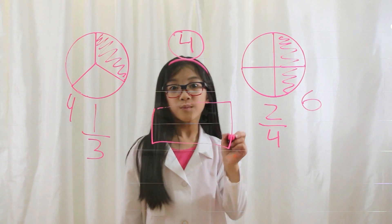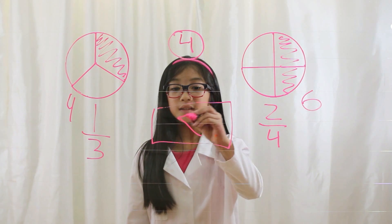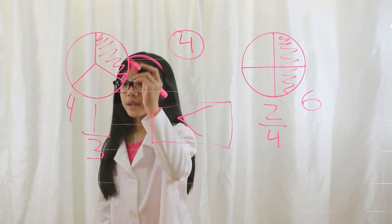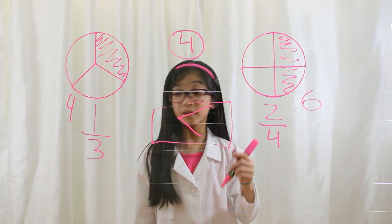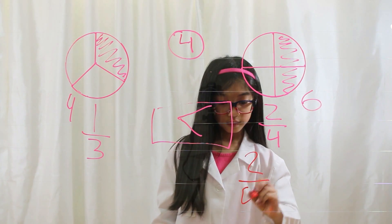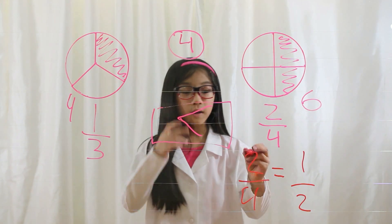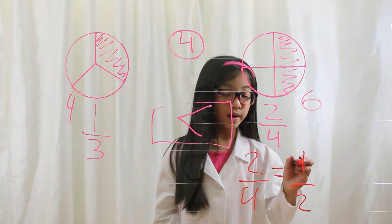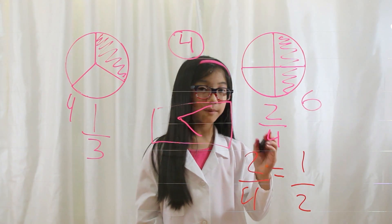Which one is bigger, four or six? Well, six is bigger, so that means two-fourths is bigger because six is bigger. You can also tell that this half pie is bigger than this one-third of the pie. You know that two-fourths can also be simplified into one-half. Two-fourths equals one-half, because you divide both numbers by two: two divided by two is one, four divided by two is two. Therefore, two-fourths can be simplified into one-half.